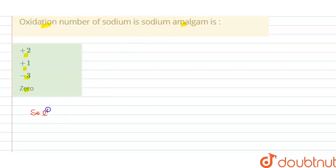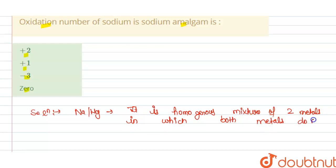We know that sodium amalgam, that is Na-Hg, is a homogeneous mixture of two metals in which both metals do not react.